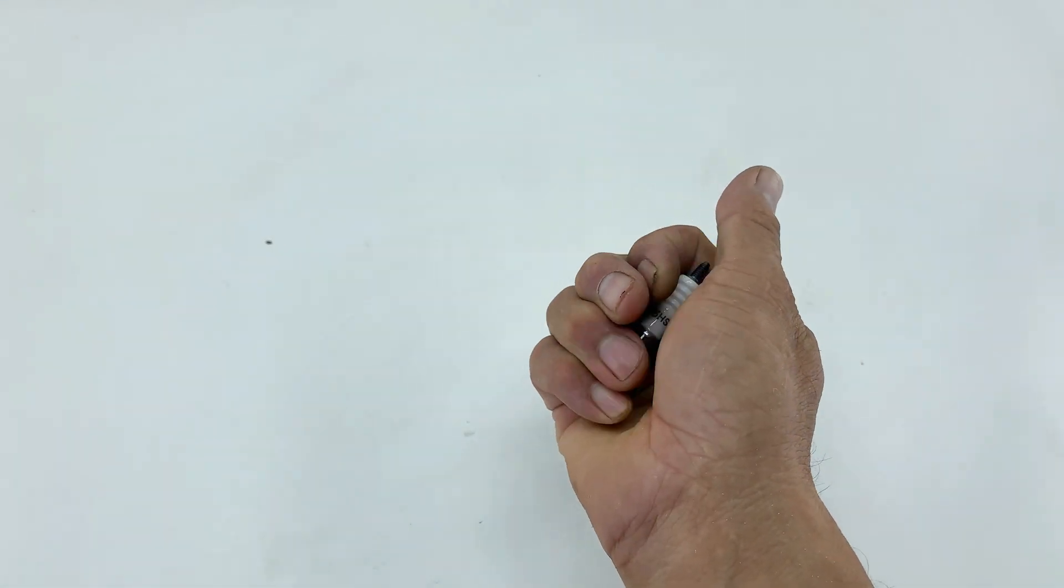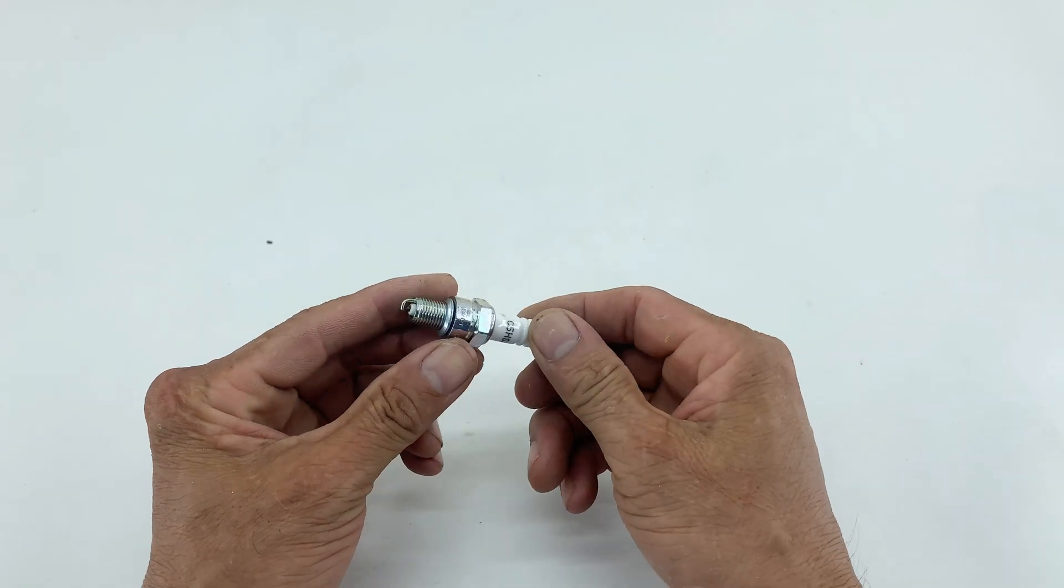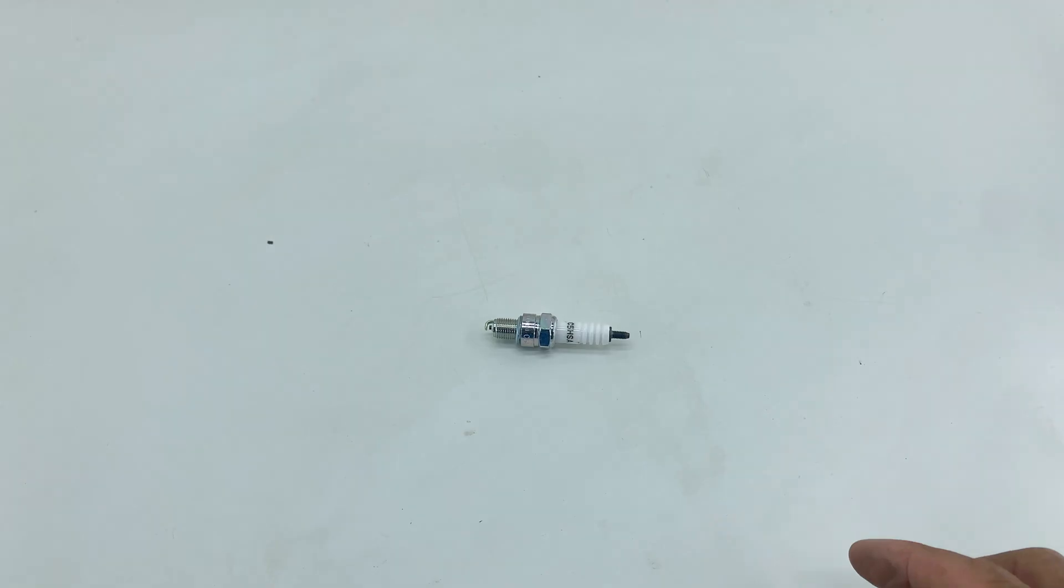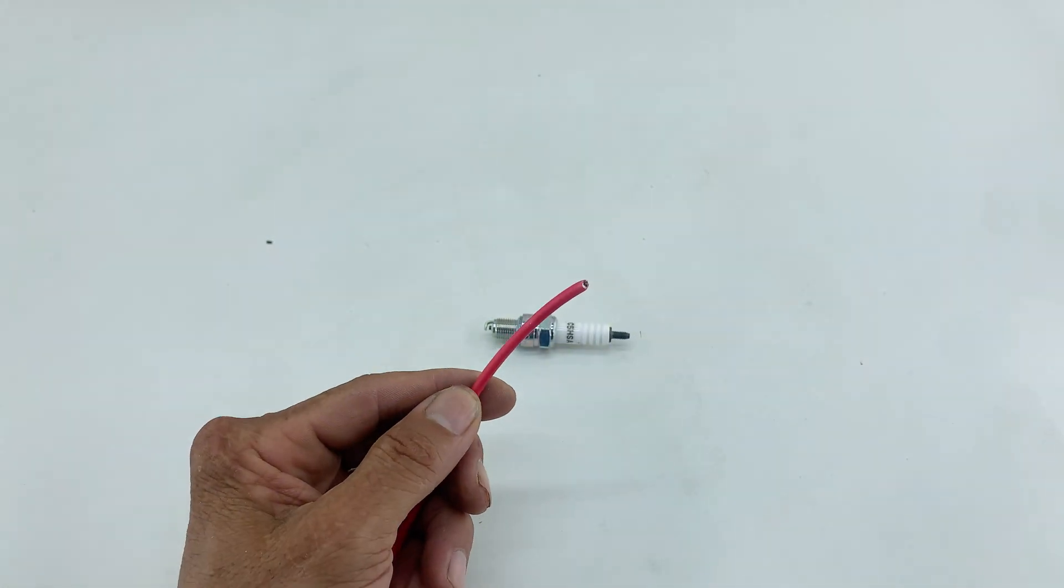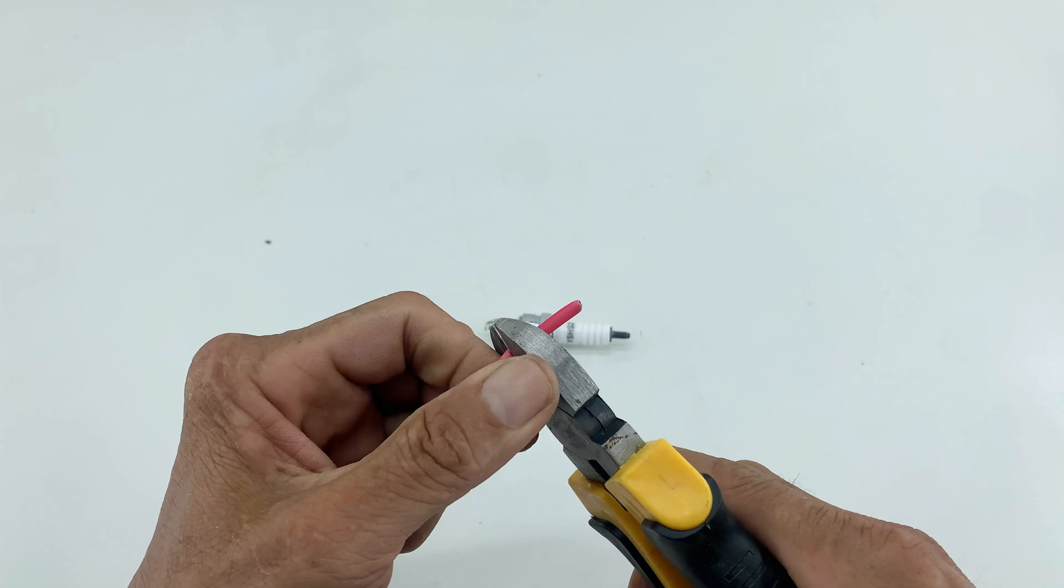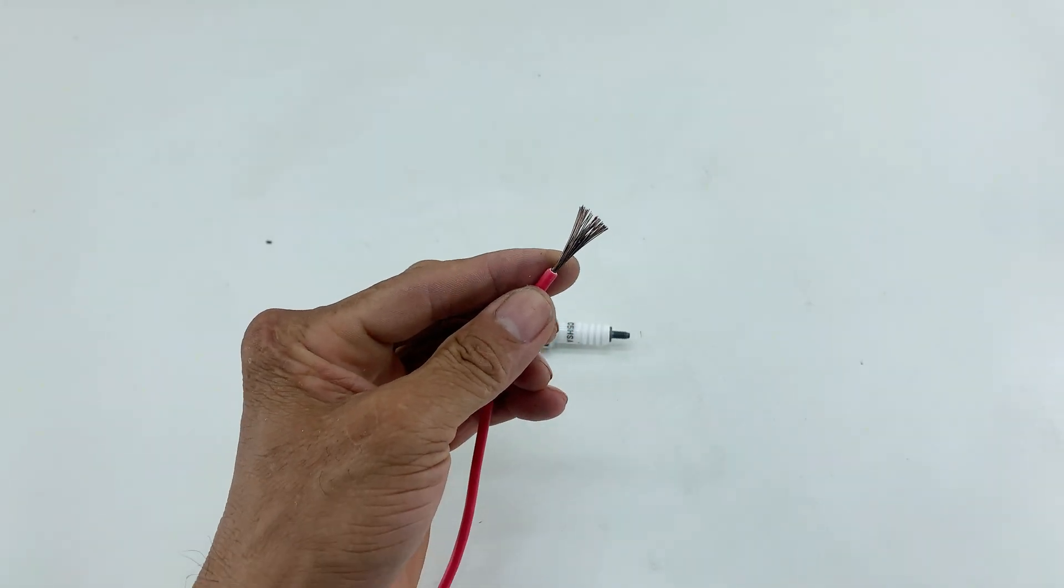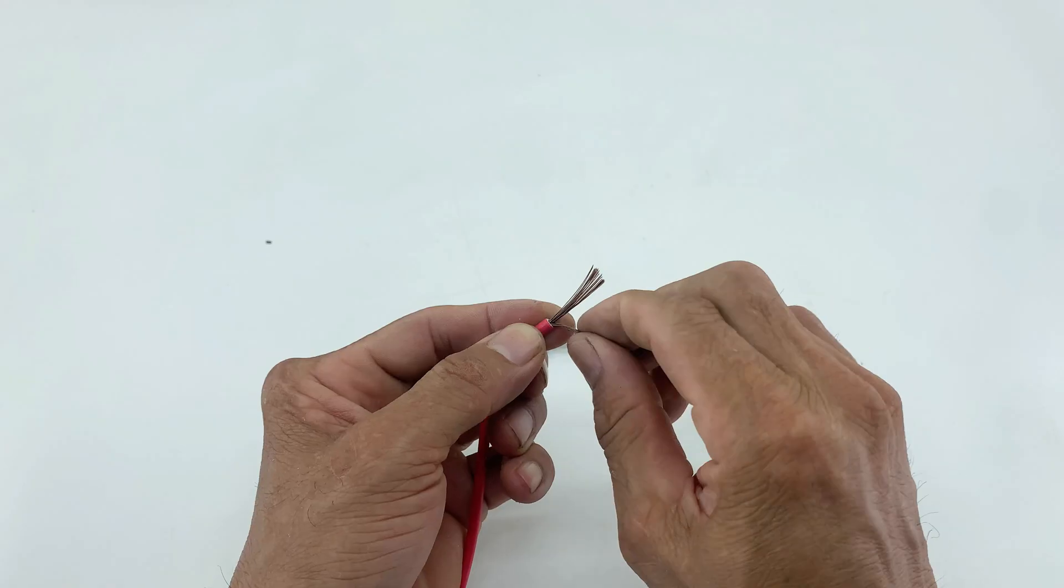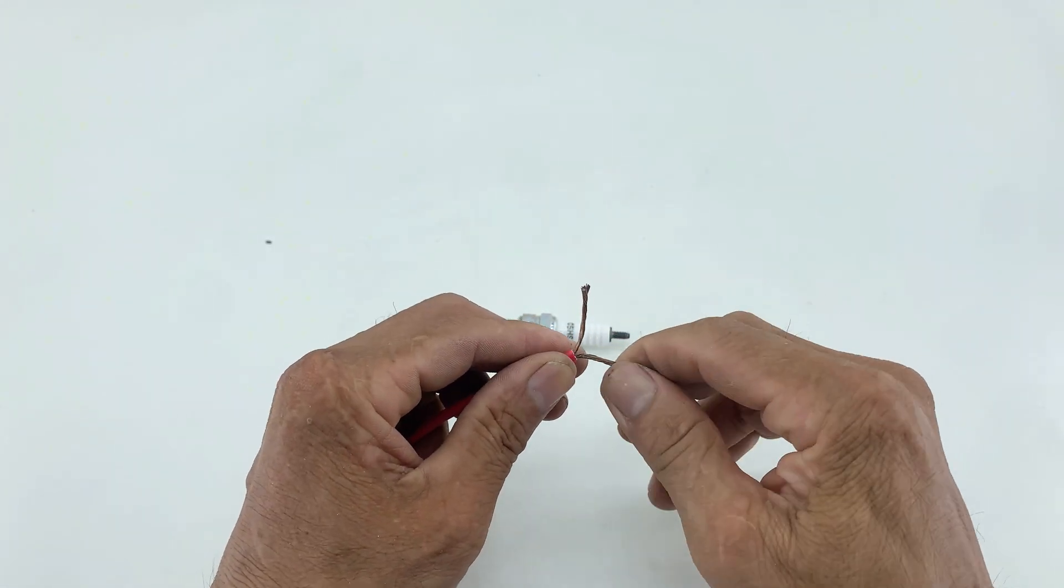You might think a spark plug, an old battery, and some cleaning solutions are just junk, but in just a few minutes, I'll turn them into a precision etching tool that will leave you absolutely amazed. I've got this red electrical wire. I'm stripping a good length from both ends to expose the copper strands. After stripping the insulation, I split the copper wire core into two parts and then twisted them tightly.